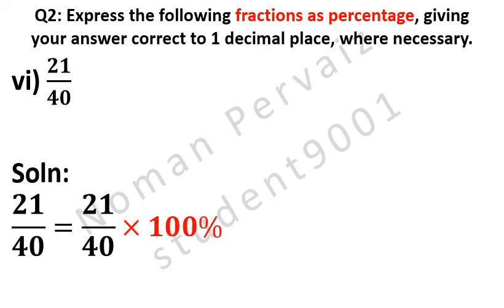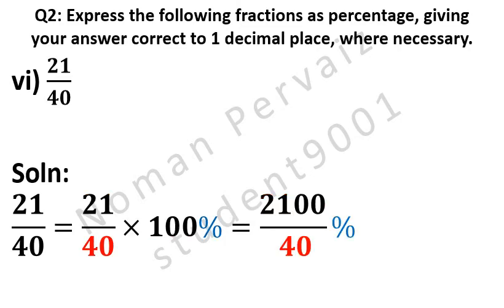To convert fraction into percentage we have to multiply it with 100%. Is equal to. 21 is multiplied with 100 becomes 2100. Divided by 40 and percent come as it is.